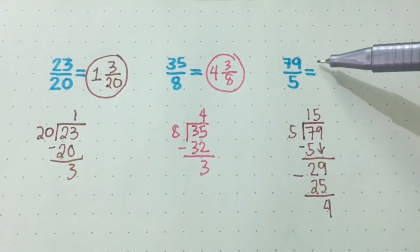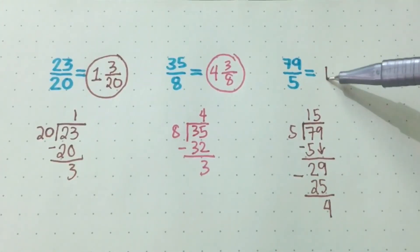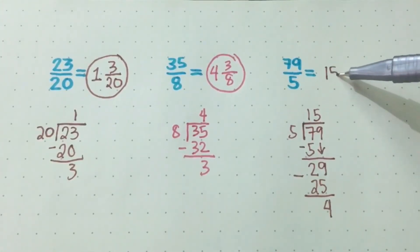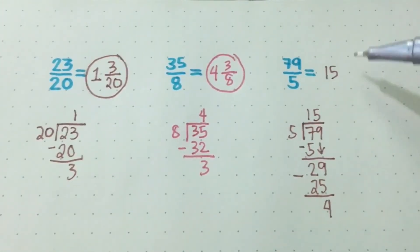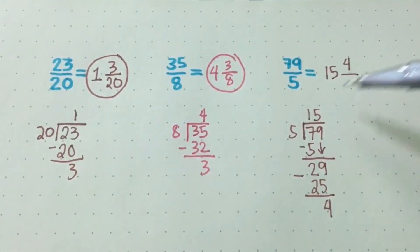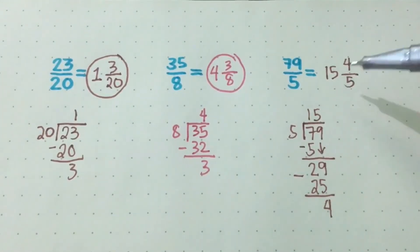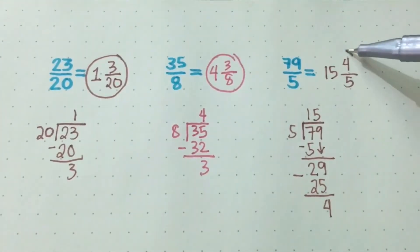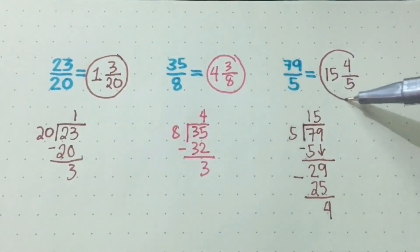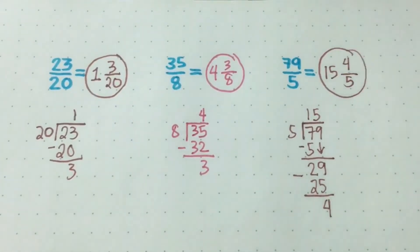Your answer, which is 15, will be your whole number. The remainder is your numerator, and the divisor is your denominator. So we got 15 and 4 over 5.